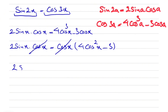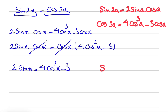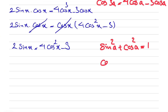After canceling we end up with 2 sine of x equals 4 cosine squared of x minus 3. Using the Pythagorean identity, sine squared a plus cosine squared a equals 1, so cosine squared of a equals 1 minus sine squared of a. We substitute that in for cosine squared of x.